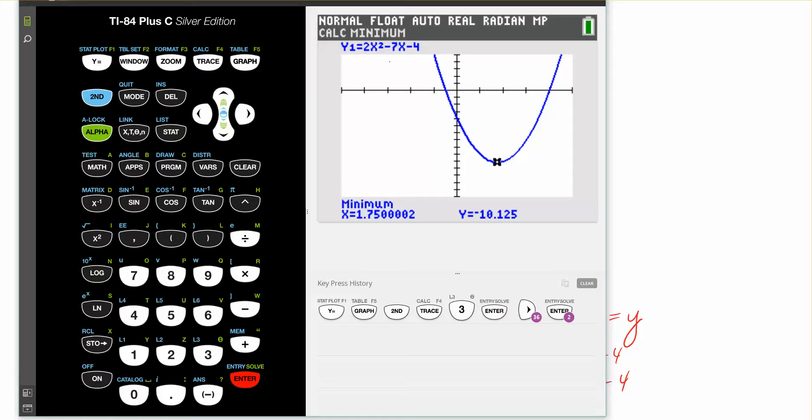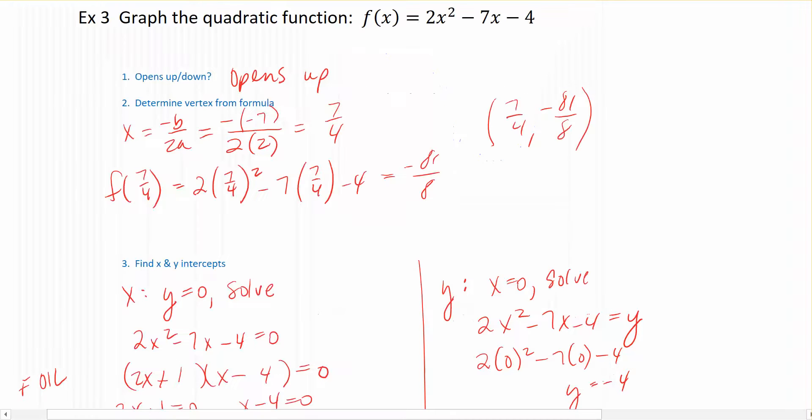Now it's asking you for a guess. You don't want to make a guess, you want the calculator to tell it to you, so you hit enter one more time. Here it's telling me the minimum value of my quadratic is occurring at 1.75 for the x value and negative 10.125 for the y value. We can go back and see that 1.75, if you were to find the decimal value for your vertex that we just calculated, that is, in fact, the actual vertex that we found.